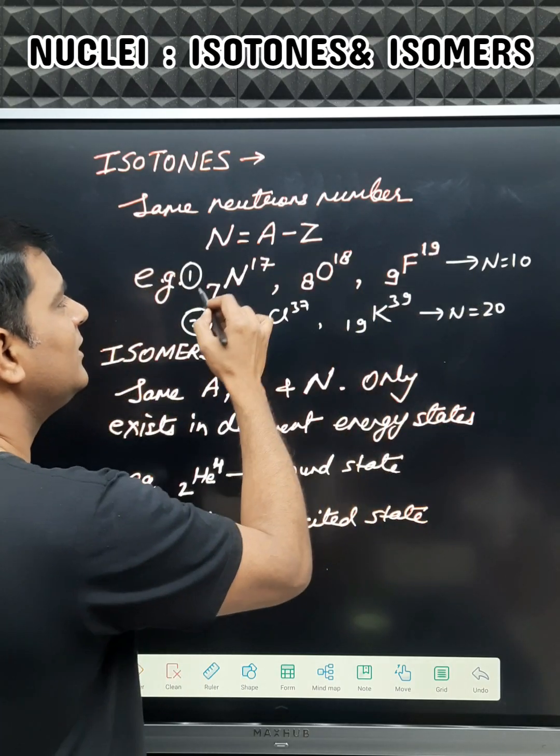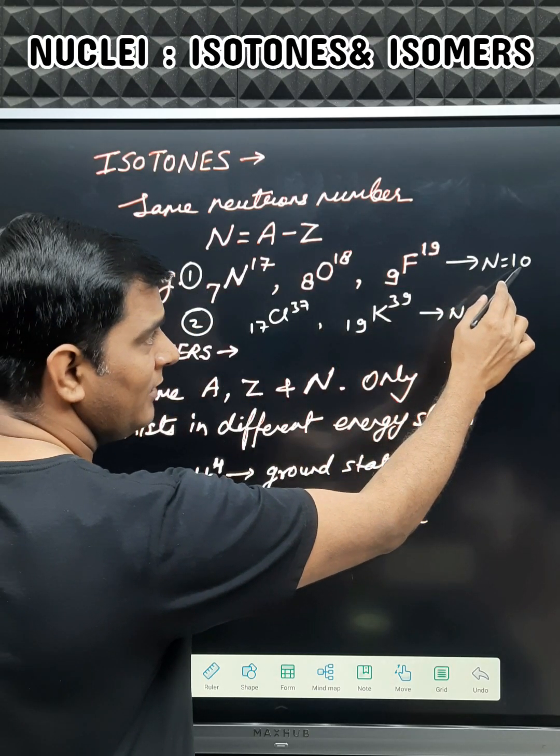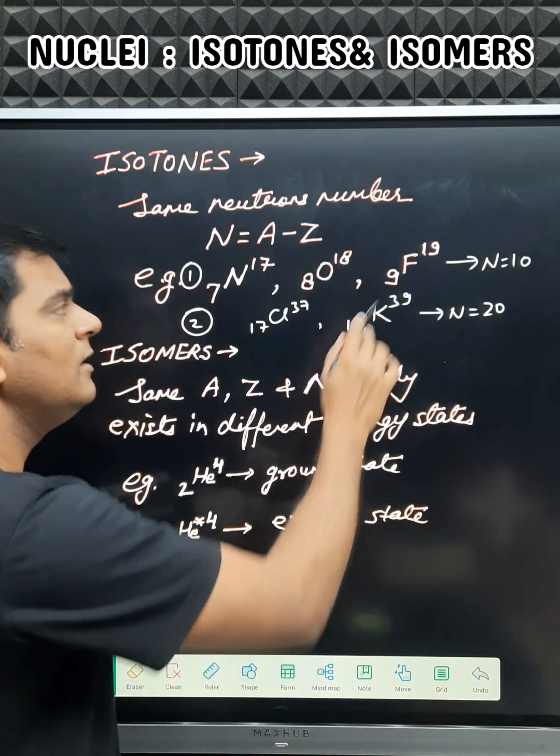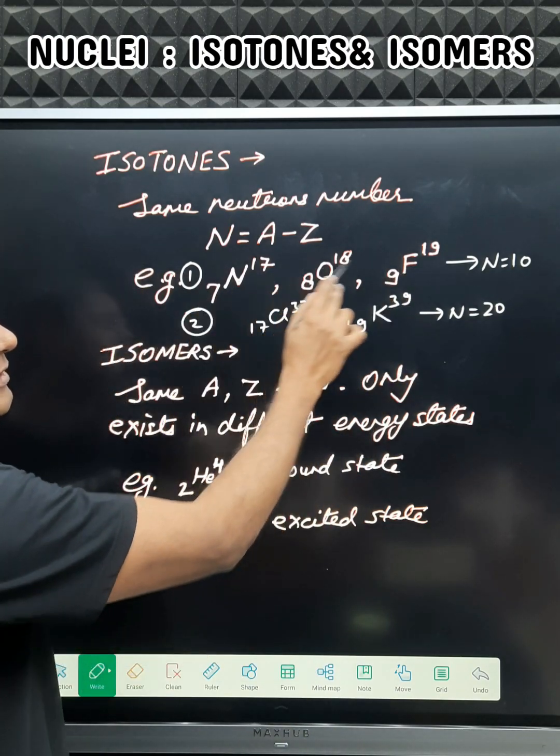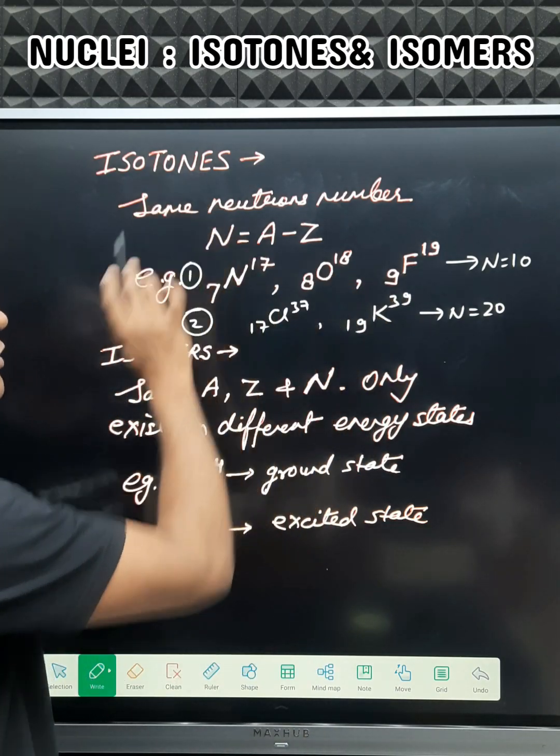They are having the difference of A minus Z equals to 10, which is the number of neutrons. And since 10 is same for all these three nuclei, so they are called isotones.